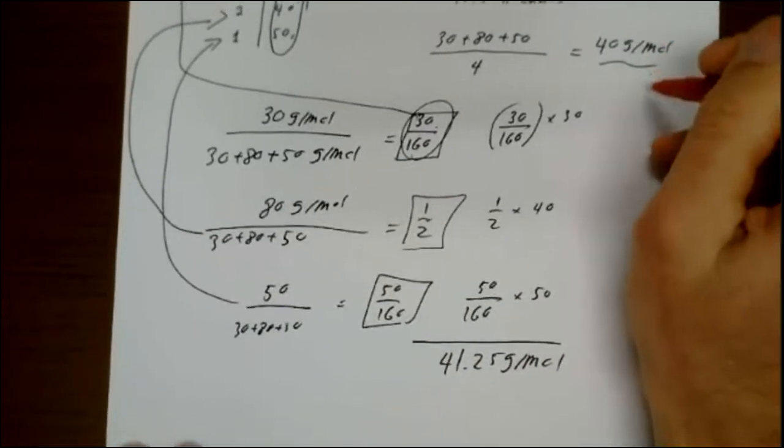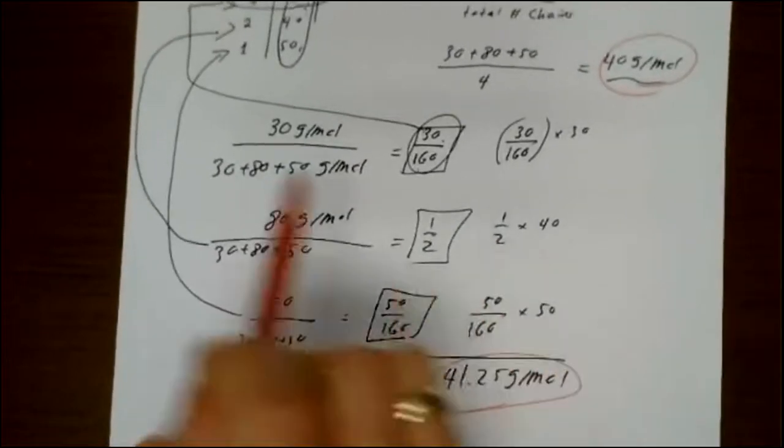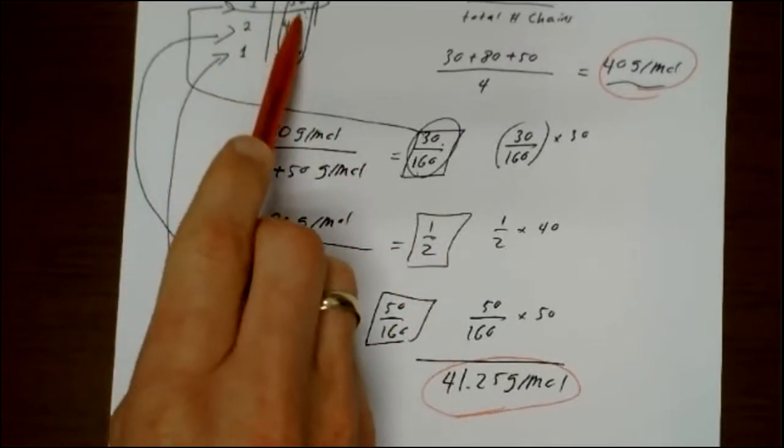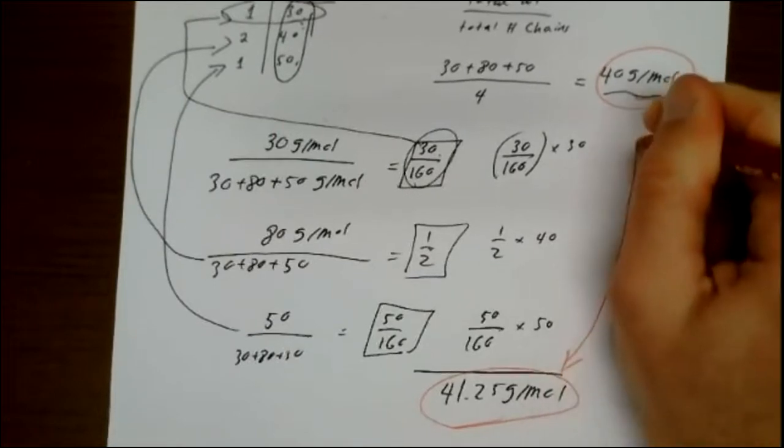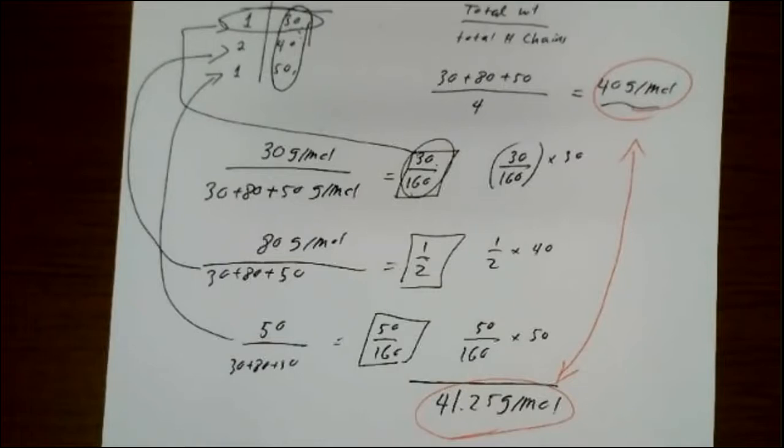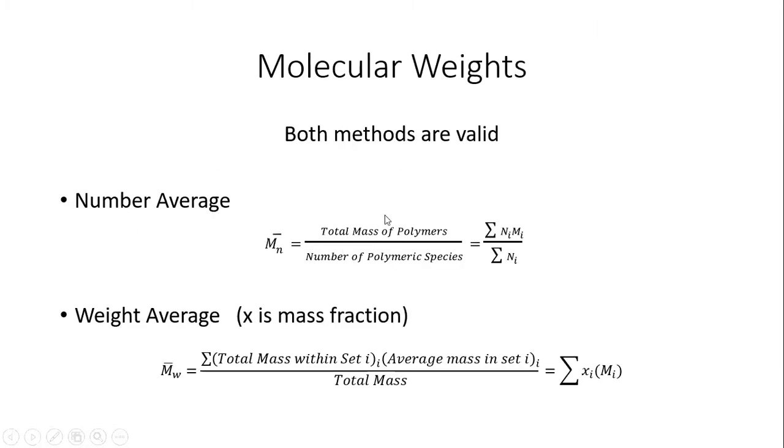You see that the method above - the total weight divided by the total number of chains - gives me 40. The method below - using fractions of my sample - gives me 41.25. So my question is, which one do I take? Which one is the correct one? The short of it is, well, both. What I showed you first is known as the number average molecular weight. We take the total mass of the polymers and divide it by the number of polymer molecules. The weight average is you take the mass fraction of each sample and multiply it by the mass in that sample and divide by the total mass. It's just a weighted average.